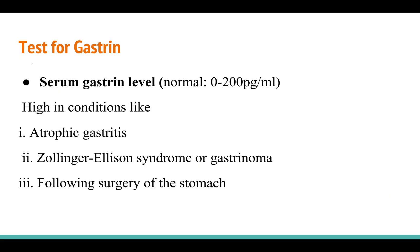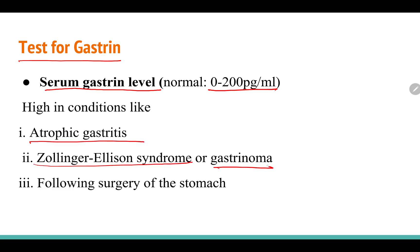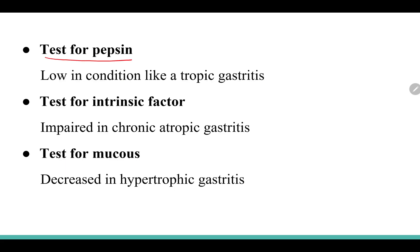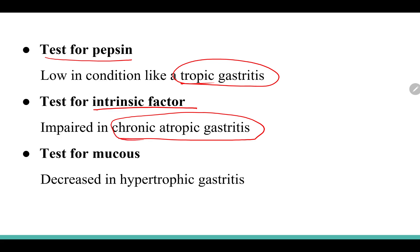For the gastrin test, we measure serum gastrin levels, which are normally 0 to 200 picograms. High levels are found in atrophic gastritis, Zollinger-Ellison syndrome (gastrinoma), and following surgery of the stomach. Test for pepsin is low in atrophic gastritis. Intrinsic factor is impaired in chronic atrophic gastritis. Test for mucus shows decreased levels in hypertrophic gastritis.